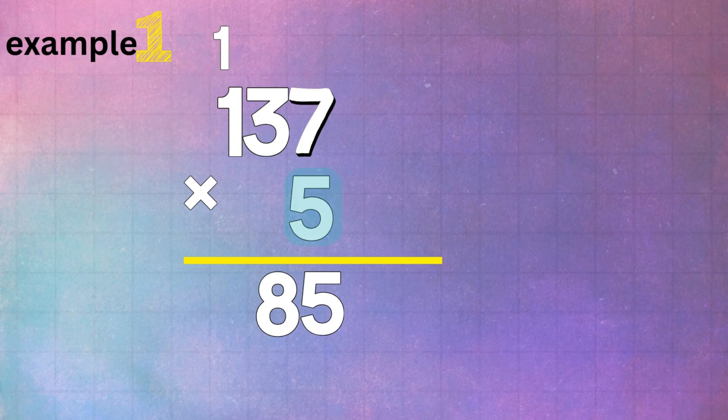Now, multiply 5 times 1, which gives us 5. Add the 1 we carried over, and that gives us 6. So, 137 times 5 equals 685. Pretty simple once you break it down, right?